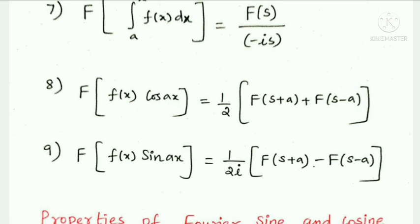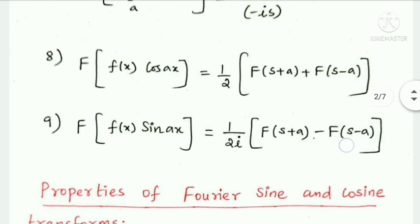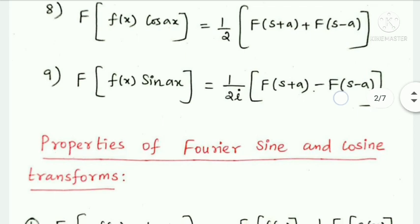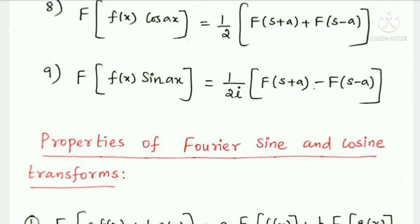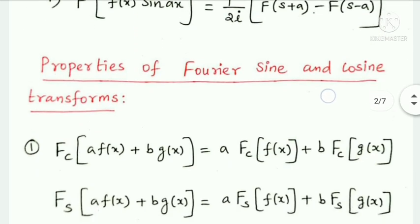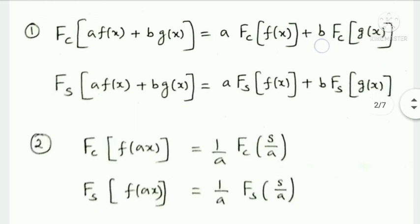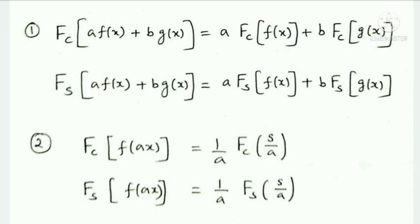Now, properties of Fourier cosine and sine transforms. The first property: Fourier cosine transform of a·f(x) + b·g(x) equals a times the Fourier cosine transform of f(x) plus b times the Fourier cosine transform of g(x).